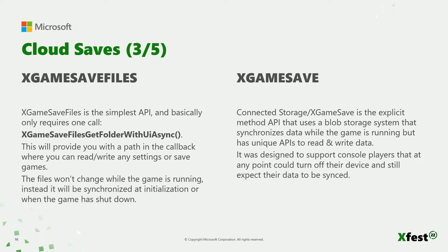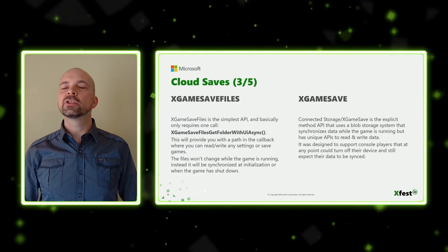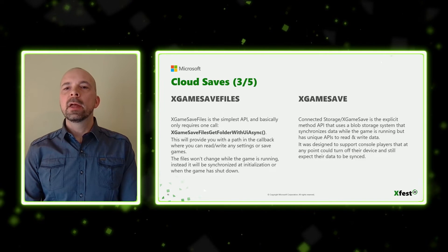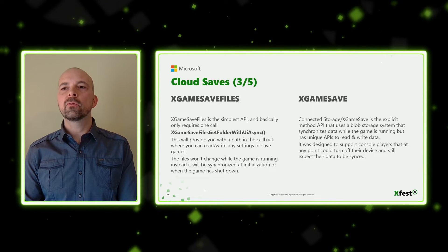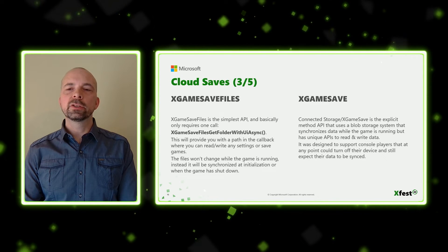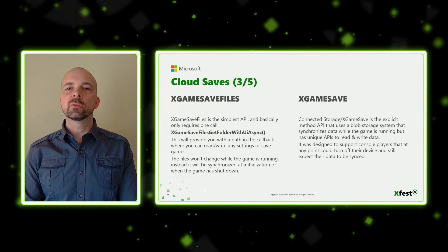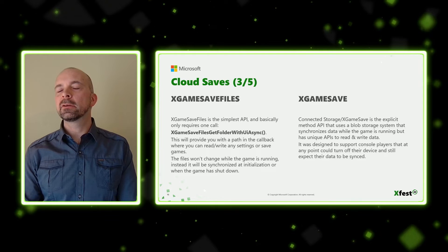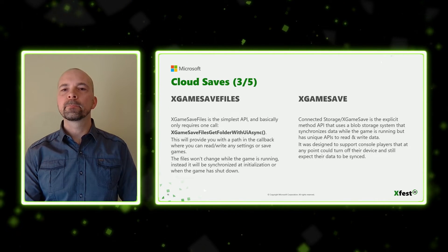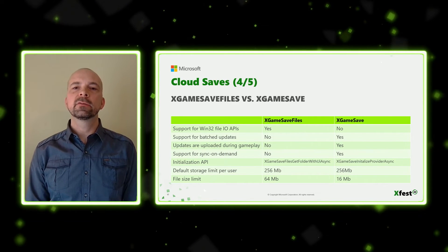XGameSaveFiles is the simplest API and basically only requires one call: XGameSaveFilesGetFolderWithUIAsync. This will provide you with a path in the callback where you can read and write any settings or save games. The files won't change while the game is running; instead, they will be synchronized at initialization or when the game has shut down. The third option is XGameSave, also known as connected storage. It's an explicit API with specific read and write methods. It's implemented using a blob storage that synchronizes at earliest convenience, meaning even when the game is running. It was designed to support console players who could turn off their device at any point and still expect their data to be synced.